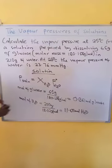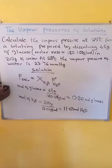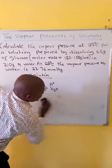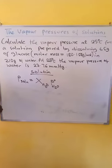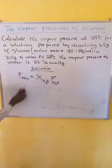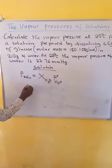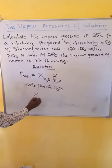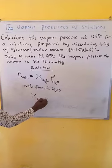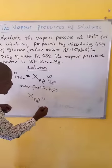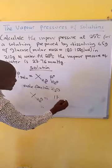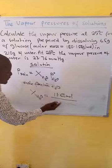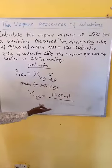Then, now, we need to calculate the mole fraction of water. The mole fraction of water is given by moles of water. The moles of water calculated is 11.65 moles over total moles of the solution.